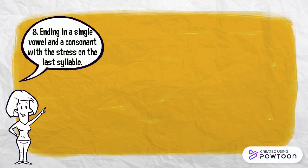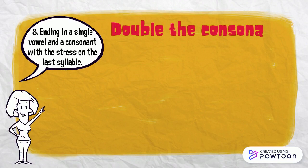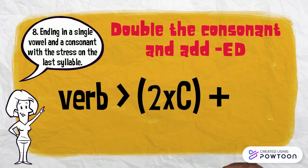When a verb ends in a vowel and a consonant and the stress is on the last syllable, we double the consonant and then add ED at the end.